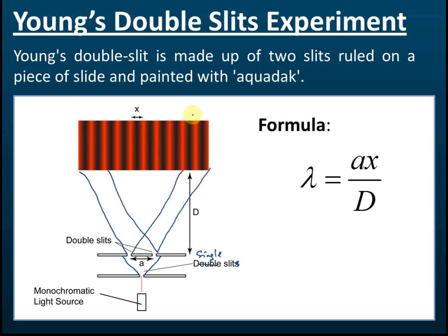then these are the patterns that we observe on the screen. There are alternate dark and bright fringes. The bright fringes are caused by constructive interference, and the dark fringes are caused by destructive interference.